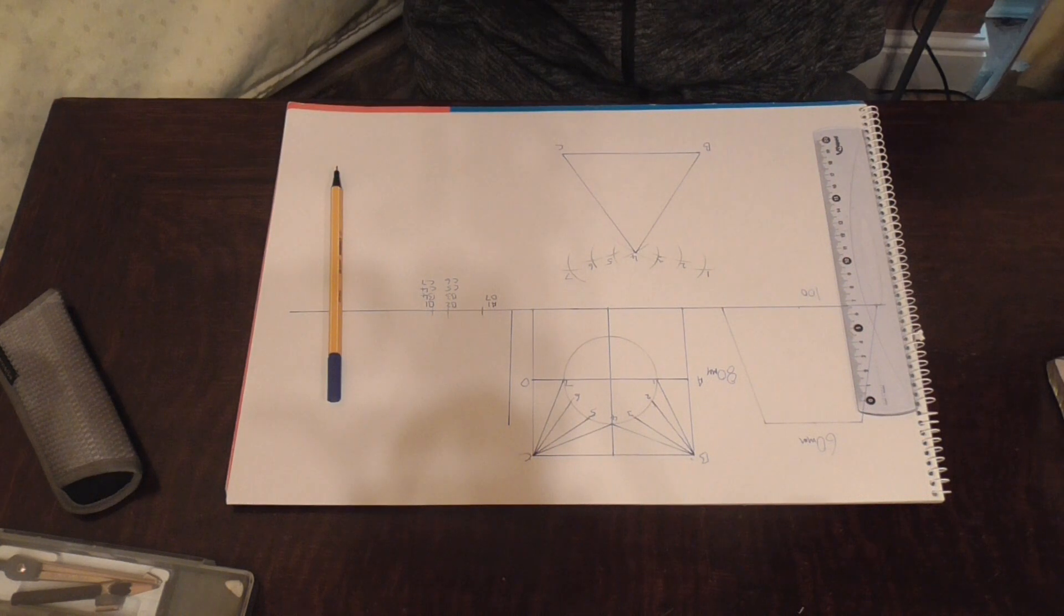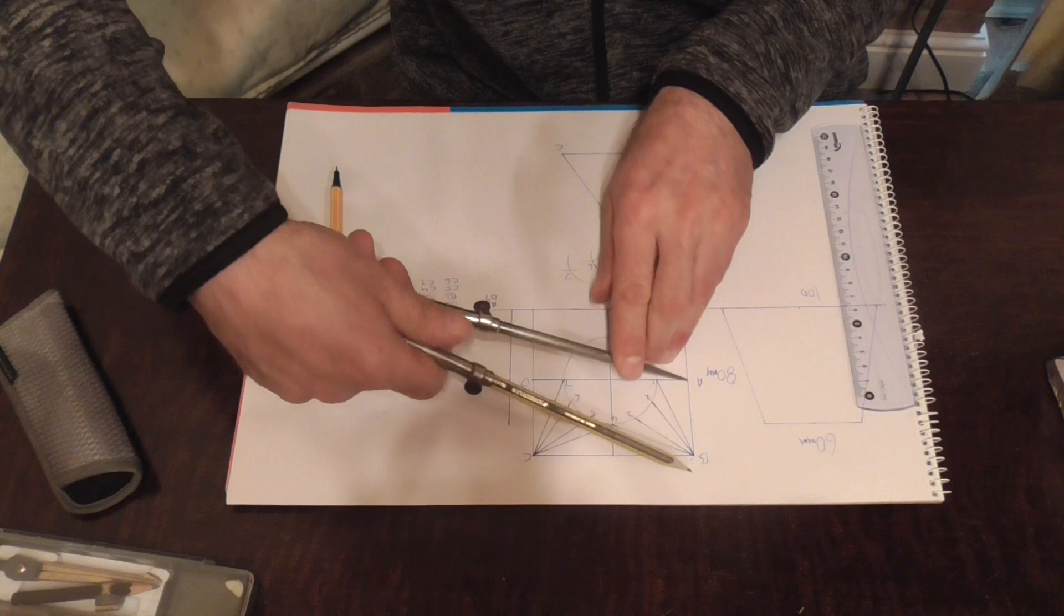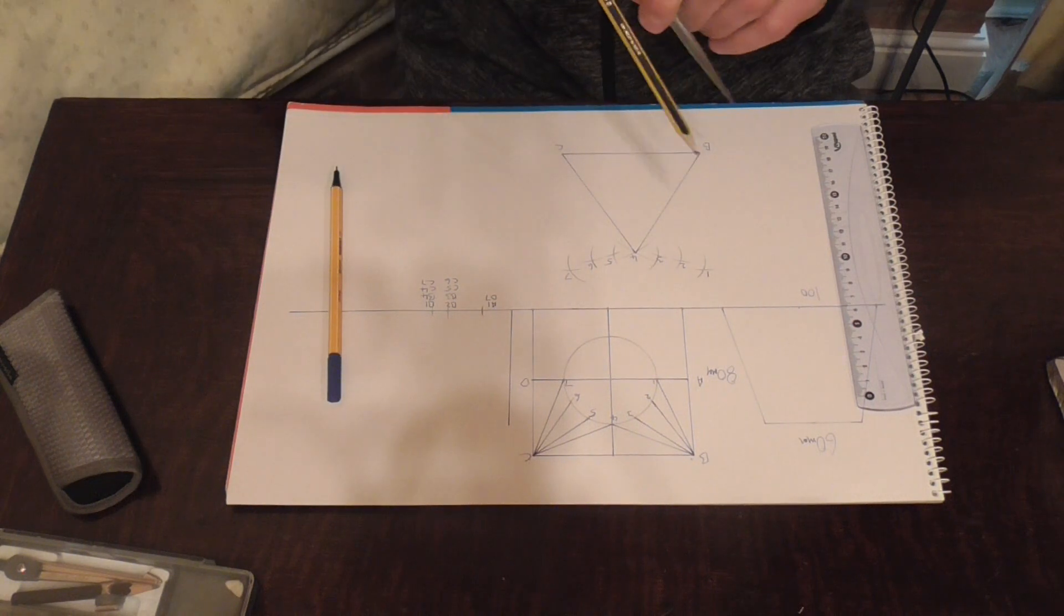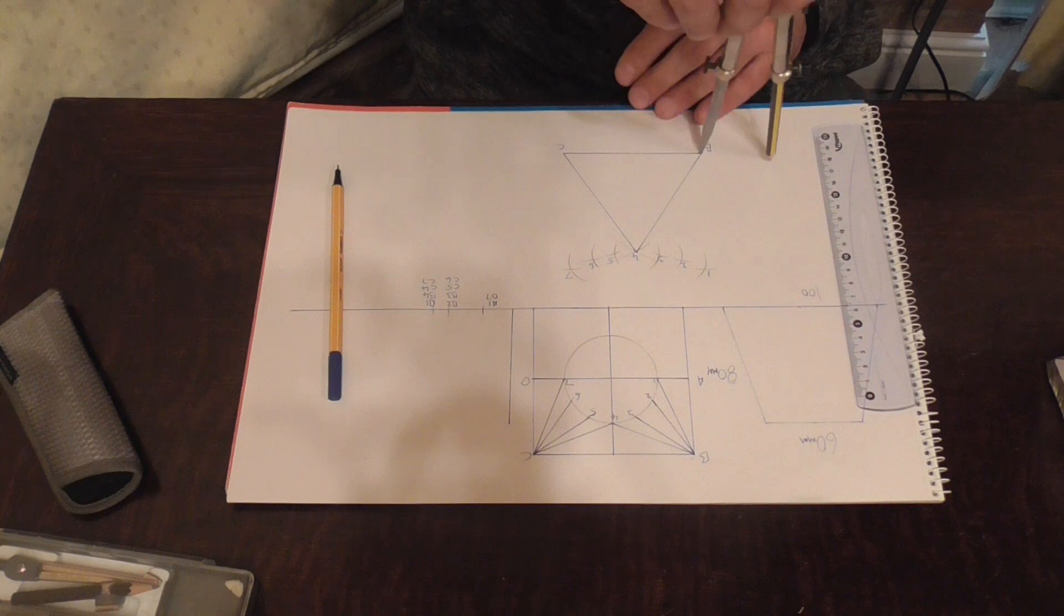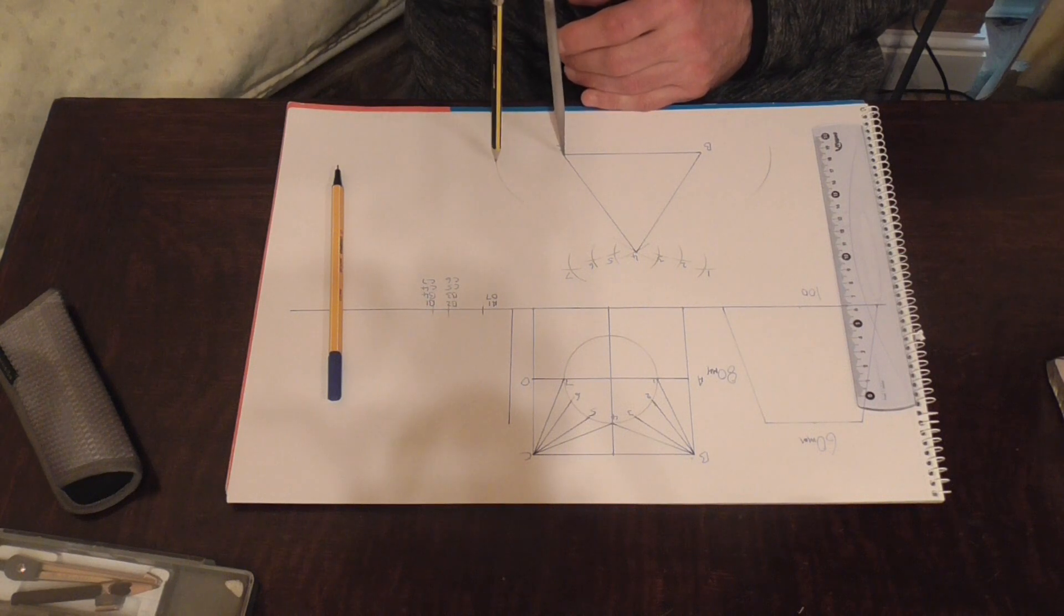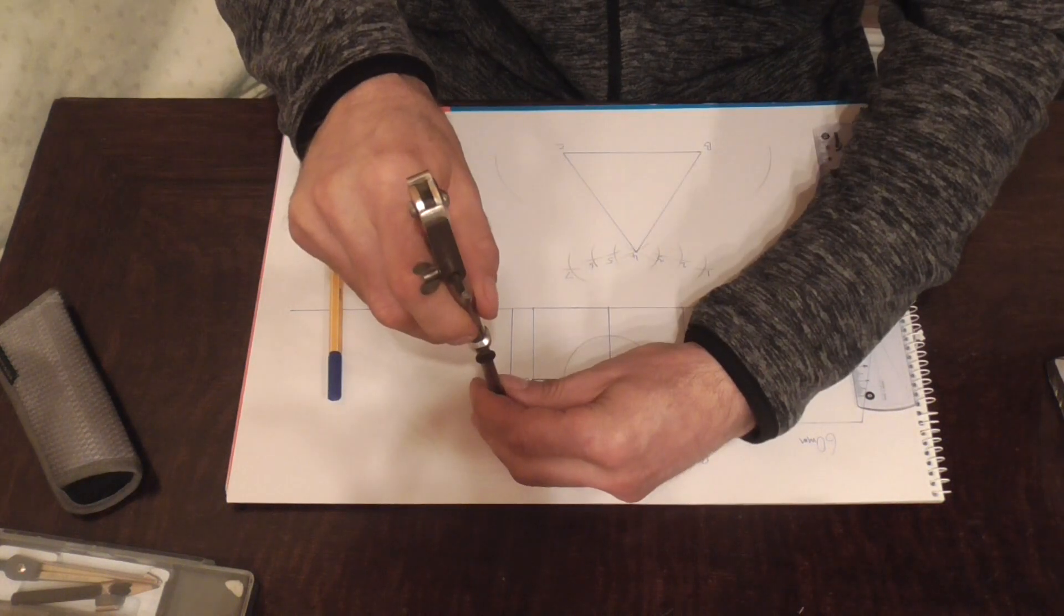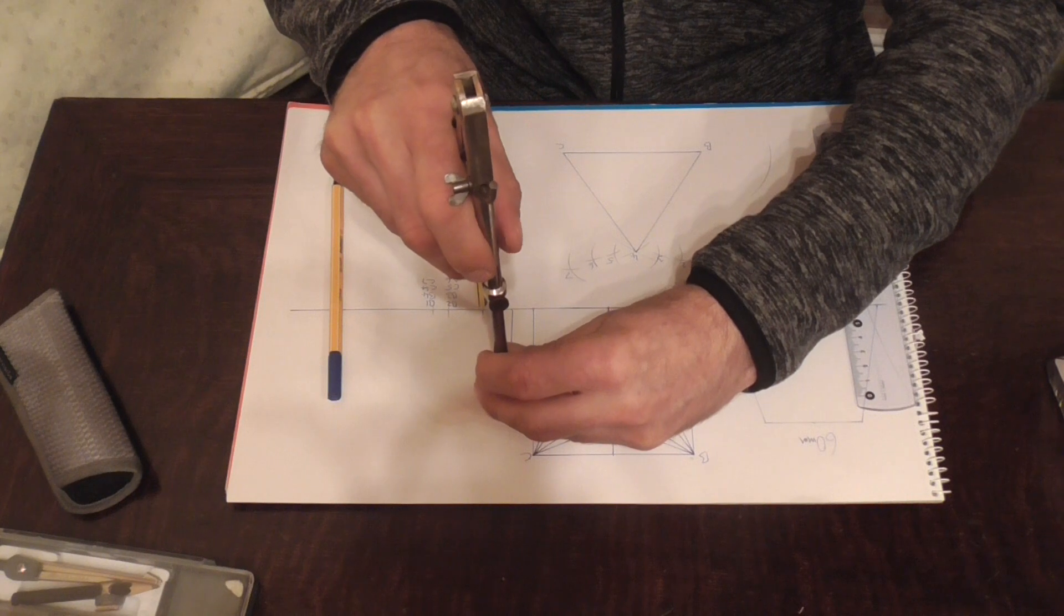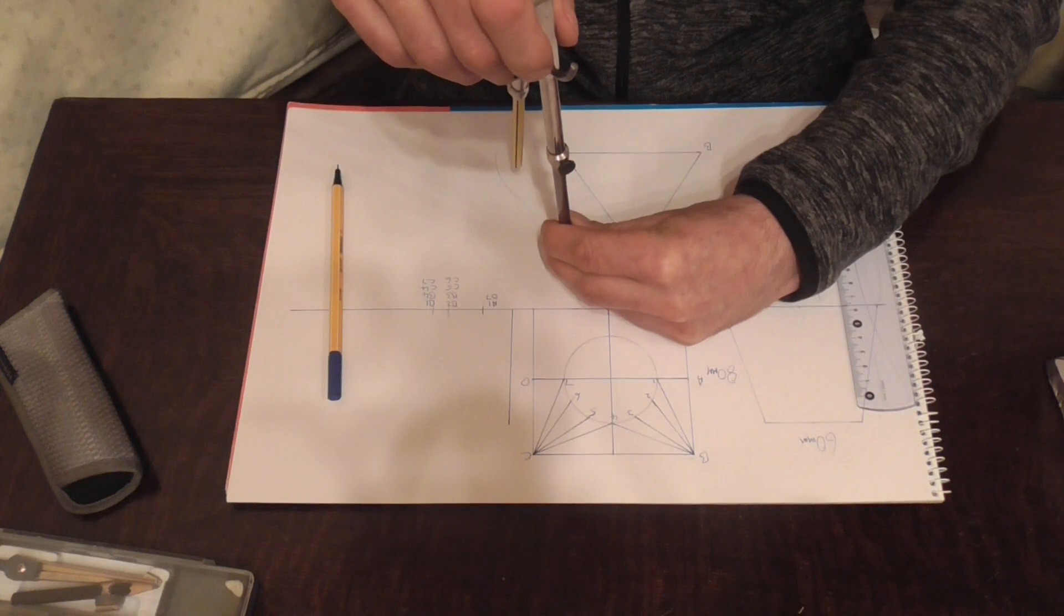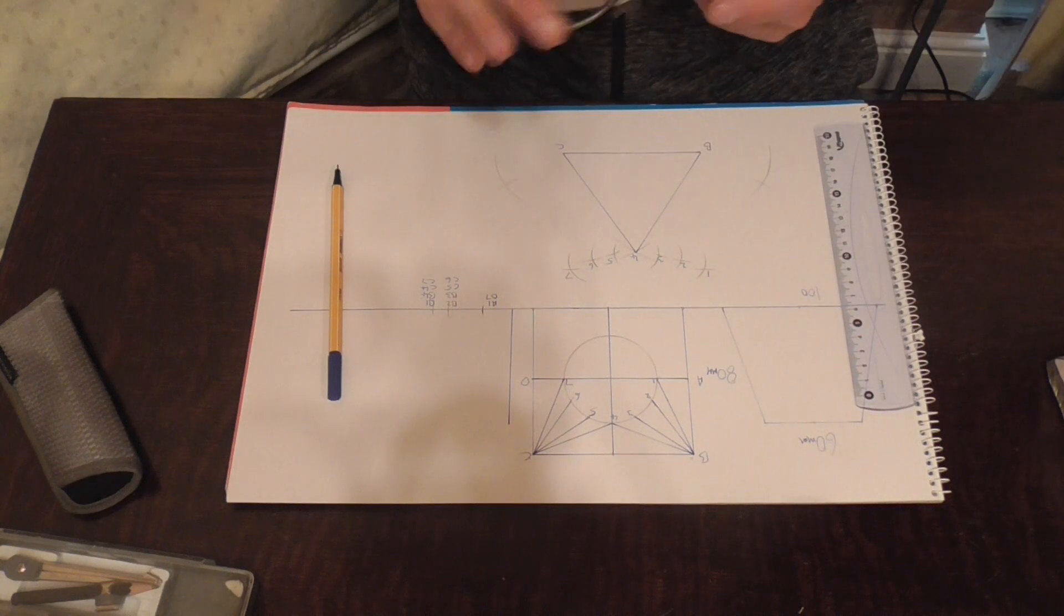So now we need to open our dividers up to half the amount, so we go from A to B and we just put an arc in from that corner there and the same on this side. And we open our dividers up to A1, place that on A7, place that on A1 and join them up.